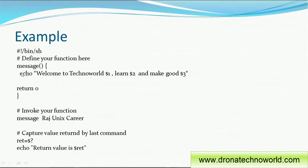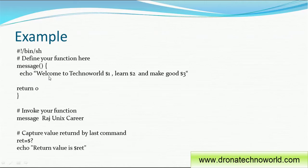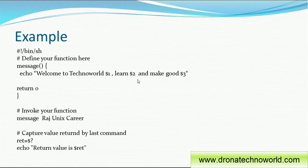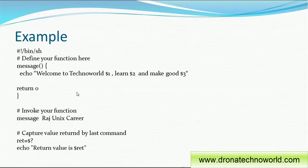Here is an example. In this example we wrote one function. In order to write a function we have to use our keyword — in this case it is 'message' — then simple open bracket, close bracket, open curly bracket, and write our business logic. Here we are echoing 'welcome to Techno World', then reading parameters from the input: parameter one, parameter two, and parameter three. You can use any number of parameters — there is no limitation, however for good programming practice it's a good idea to limit those parameters to five. After writing the business logic, we are returning zero as the value.